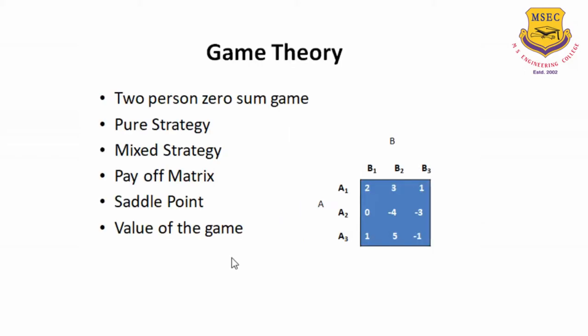Here I am going to discuss about the two-person zero-sum game, in which there will be two players — person A and person B, or it can also be a team A, team B. It may be a cricket match or it may be a business plan, whatever it is. So we are going to consider between the two persons or the two teams.